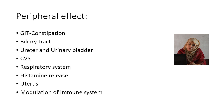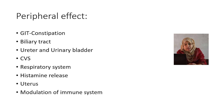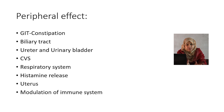Now I will discuss the peripheral effects of morphine. Number 1 is GIT constipation. Number 2, in case of the biliary tract, there is constriction of the biliary tract and contraction of the sphincter of Oddi. So in case of gallbladder stones, morphine cannot be used, as it may cause rupture of the biliary tract. In the urinary bladder, there is relaxation of the detrusor muscle and constriction of the trigone and sphincter, resulting in retention of urine.